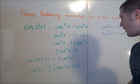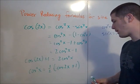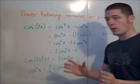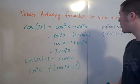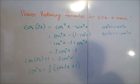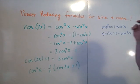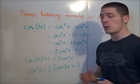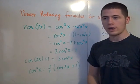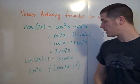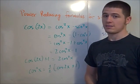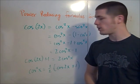So that's the power reducing formula for cosine squared x. Now we know how to derive both power reducing formulas — for cosine squared and sine squared. These are super helpful when you're integrating, for instance, sine squared or cosine squared.